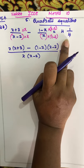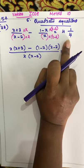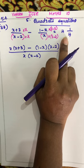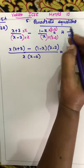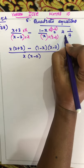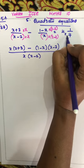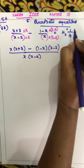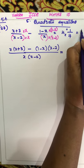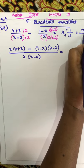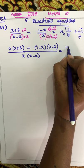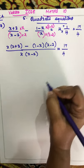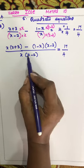See, this right-hand side is an improper fraction — a mixed fraction — so make it into improper. For that, you multiply: 4 fours are 16, 16 plus 1 is 17. So this is 17 by 4.